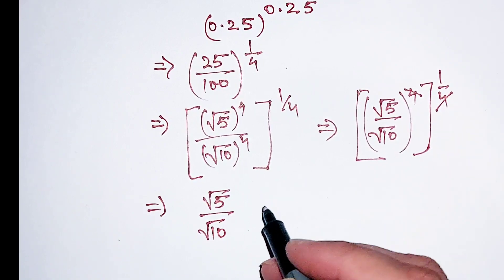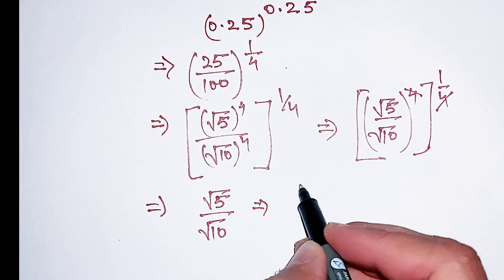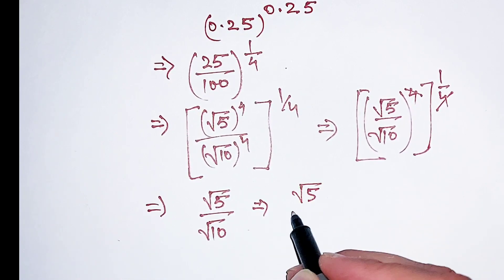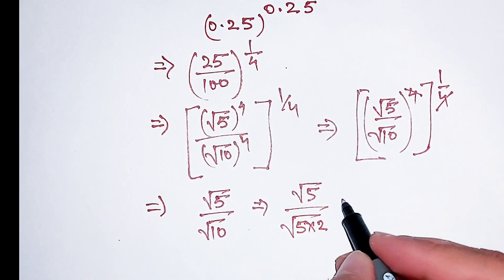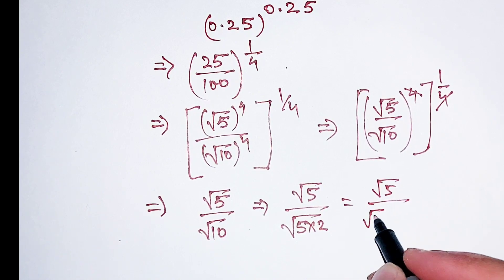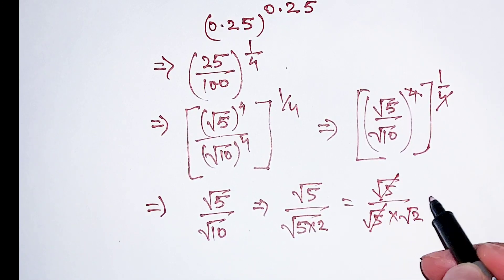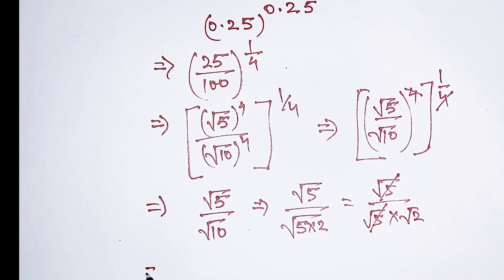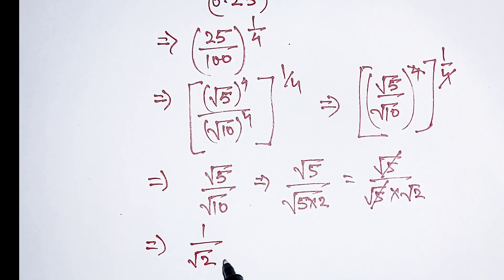The power is now 1. Square root of 10 can be written as 5 multiplied by 2, which is the same as square root of 5 multiplied by square root of 2. This square root of 5 cancels with the square root of 5 in the numerator, leaving us with 1 over square root of 2.